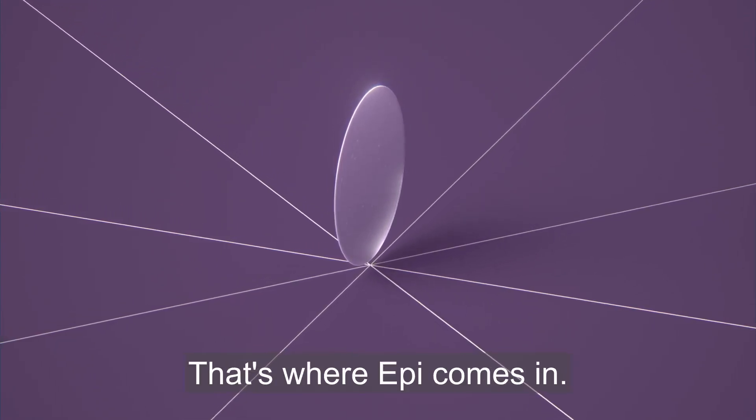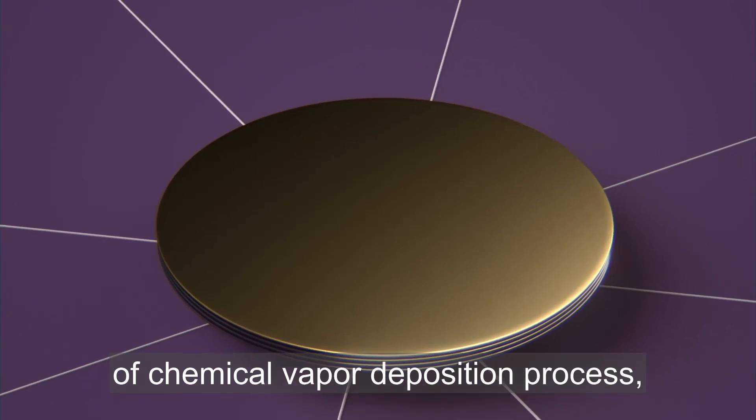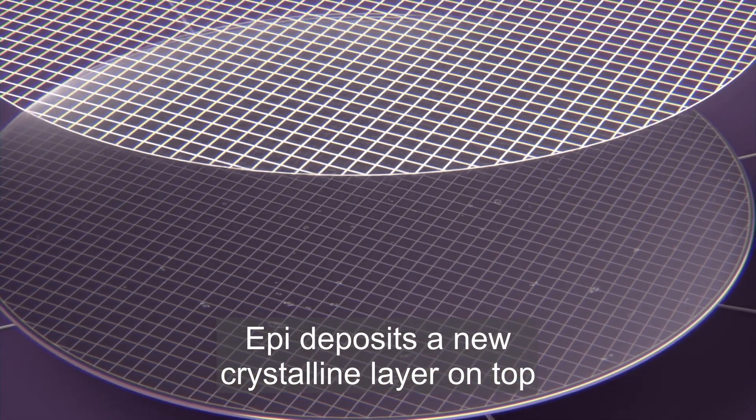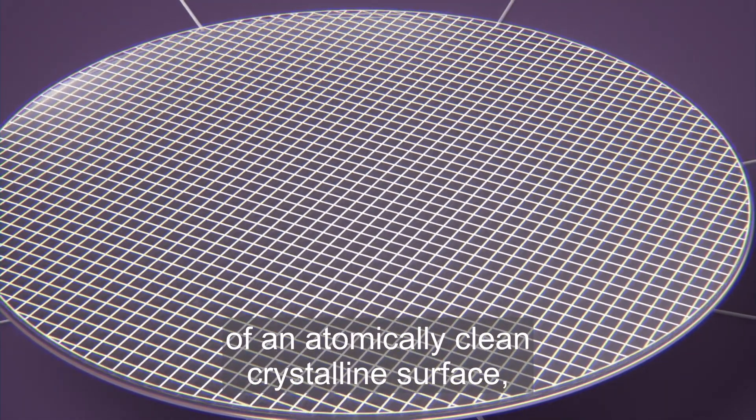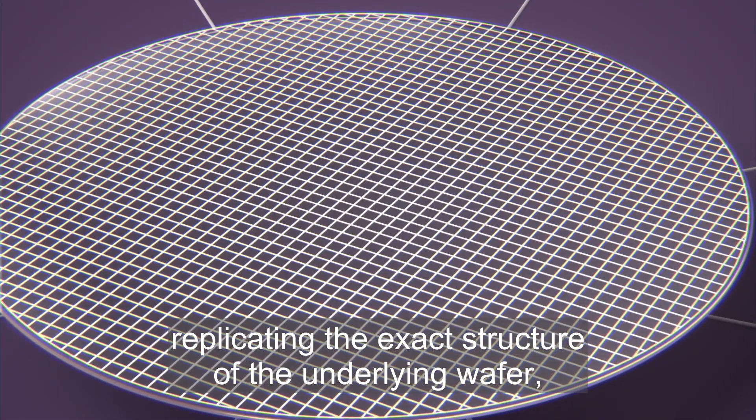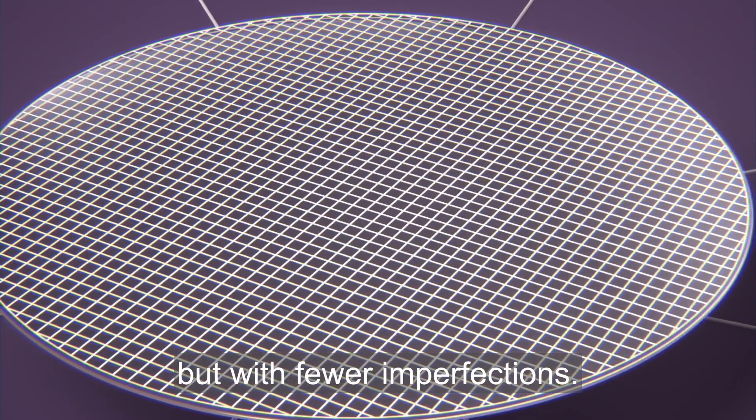That's where Epi comes in. Using a special kind of chemical vapor deposition process, Epi deposits a new crystalline layer on top of an atomically clean crystalline surface, replicating the exact structure of the underlying wafer, but with fewer imperfections.